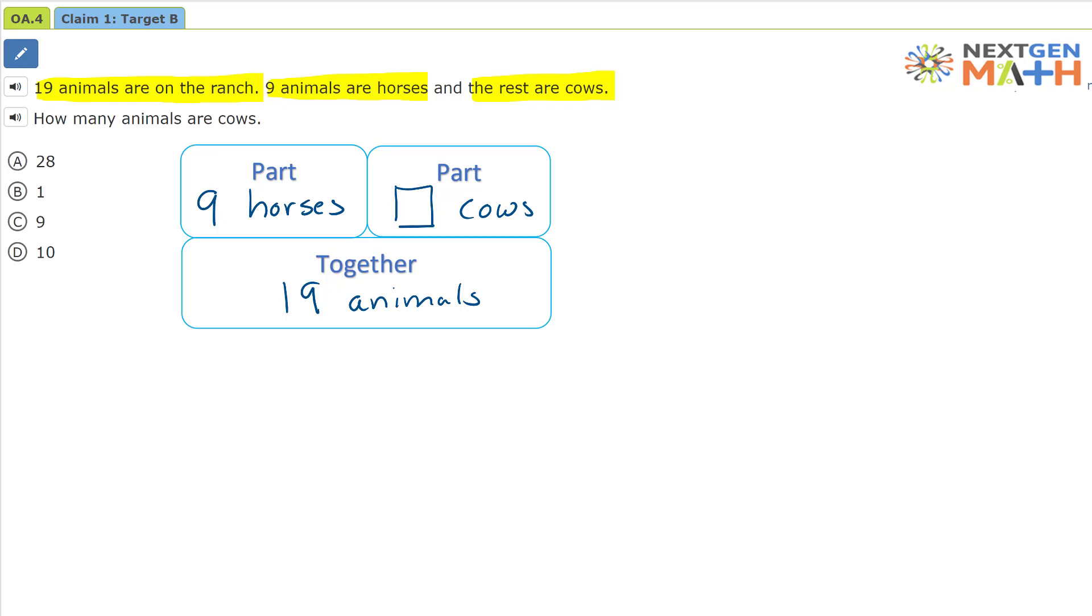What our graphic organizer helps us to do is this. We know that we have nine plus an unknown amount is going to be equal to nineteen. Because the two parts up here is equal to everything together.